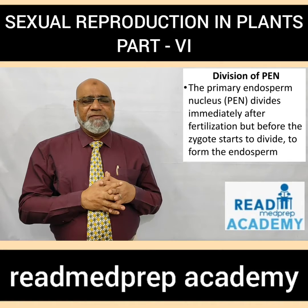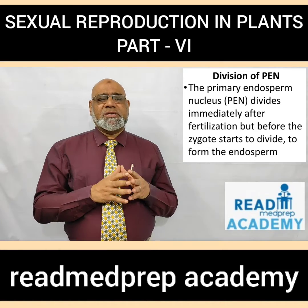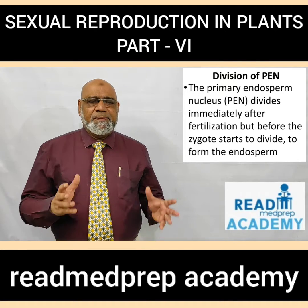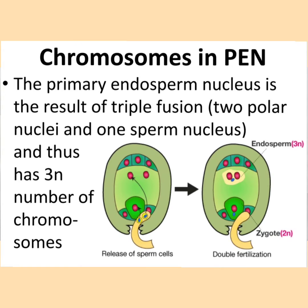The primary endosperm nucleus divides immediately after fertilization but before the zygote starts to divide, forming the endosperm. The primary endosperm nucleus results from triple fusion — the fusion of two polar nuclei and one sperm nucleus. The polar nuclei each have n chromosomes and the sperm nucleus has n chromosomes, so the fusion of three nuclei results in 3n chromosomes in the endosperm. In the image you can see the formation of the endosperm by fusion of one male gamete and two polar nuclei, and the zygote (2n) by fusion of one male gamete and the egg nucleus.